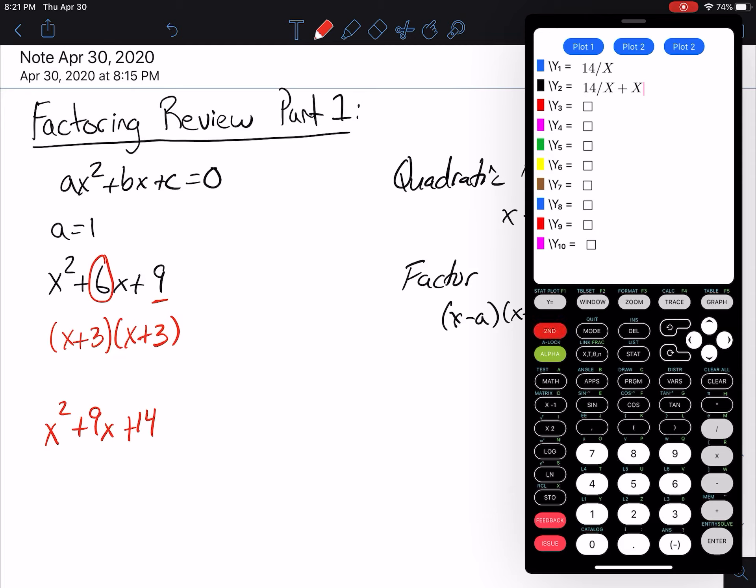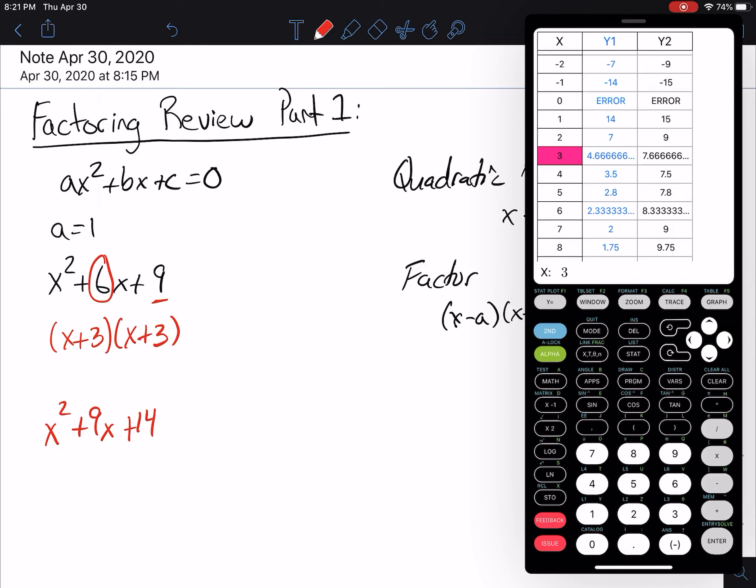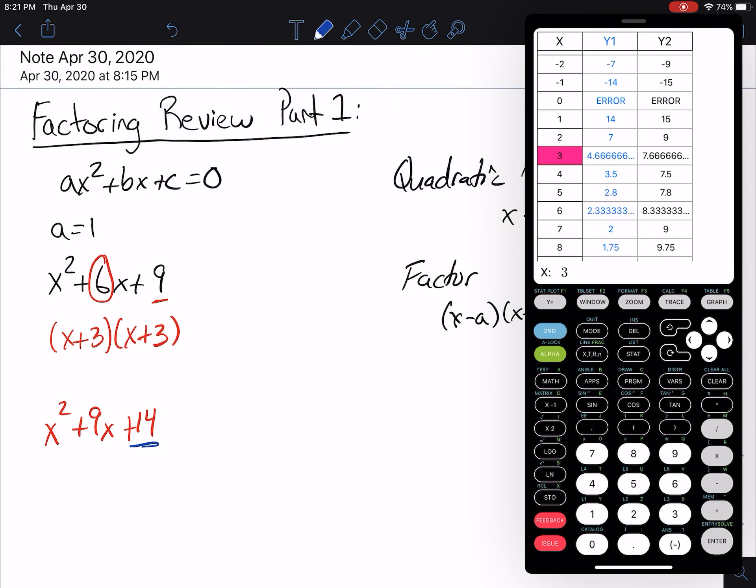So we're going to go to our table, second graph, and we're looking for where the third column is a 9. So we started with the 14, looking for where the third column is a positive 9, and it's right here, 2 and 7. So this is going to factor to x plus 2, x plus 7.